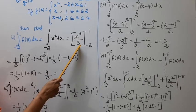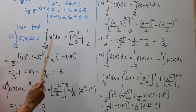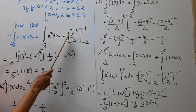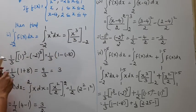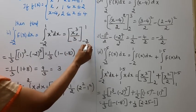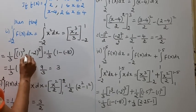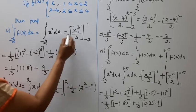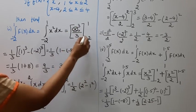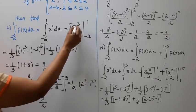x cubed by 3, evaluated from minus 2 to 1. That gives us 1 by 3 times the quantity. Applying the upper limit and lower limit: 1 cube minus minus 2 cube.